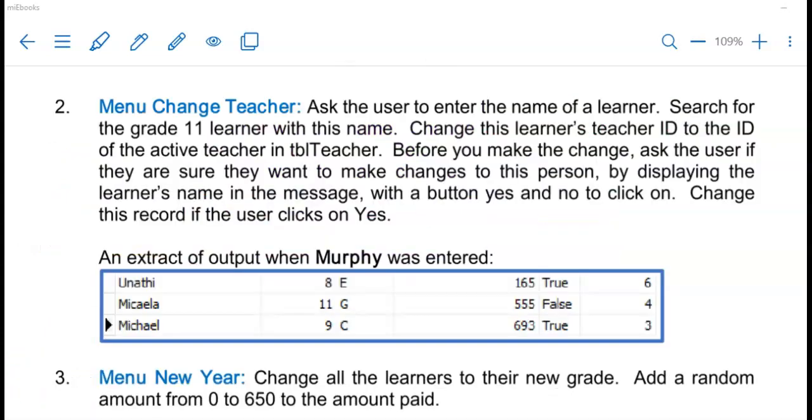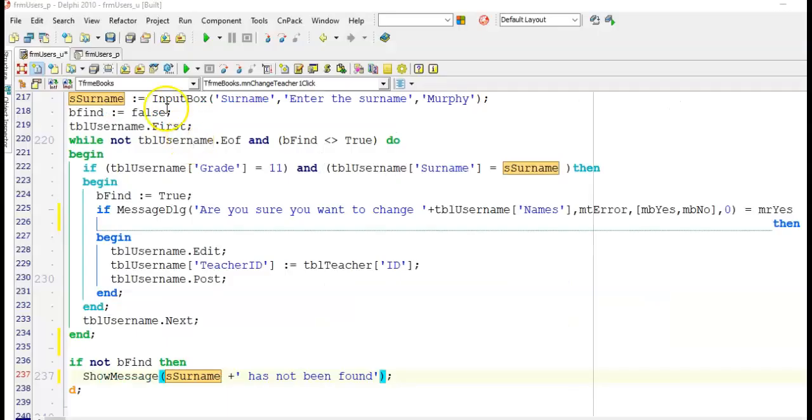Go to the menu change teacher. Try it yourself. Press pause. And I will show you the memo as soon as you're done. So here I'm using the input box to get input from the user for this user's surname. And I always just put a default value there as per the screenshot of the example of output in the paper as it speeds up my processing of my program. So I'm putting in Murphy here. I'm using a Boolean variable set to false to make my loop stop when I find this user.